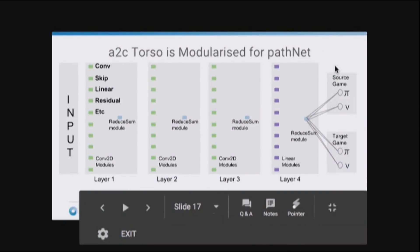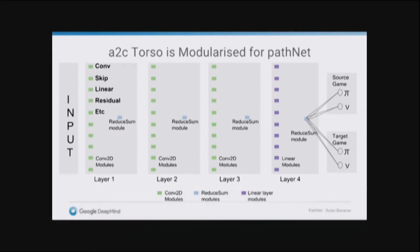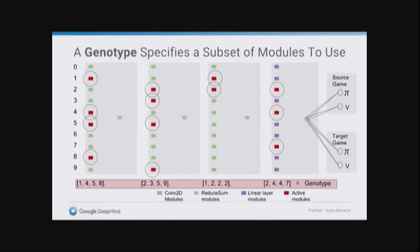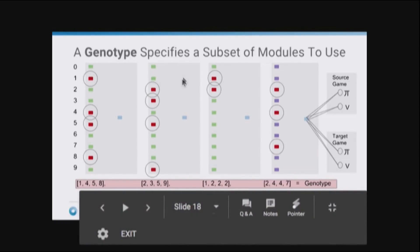What we do is break up each of those layers into little modules. In a lot of the experiments, we made those modules a bit different. Some of the modules were just skip connections. Some of the modules were residual. Some of them were linears. Maybe linears of different sizes. So you choose your set of modules. And then the genotype specifies a subset of those modules in each layer. Here we choose four out of ten modules in each layer. The red squares there are the modules that are chosen in each layer. And we're only going to train that subset of modules.